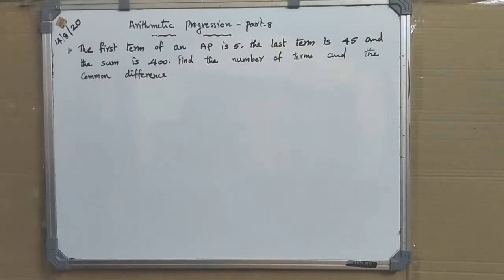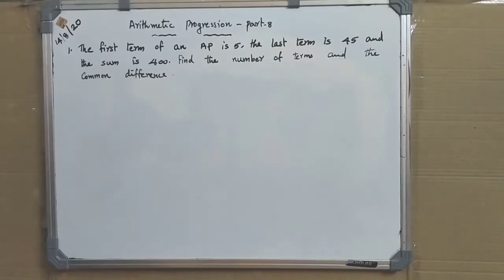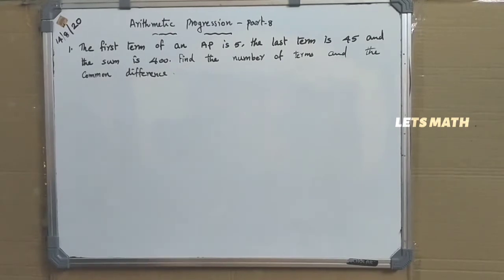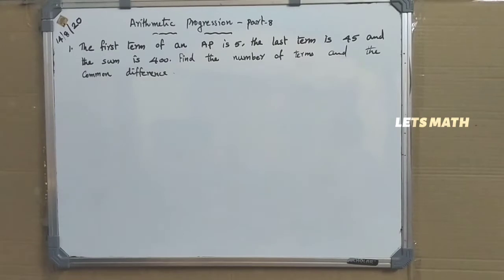Welcome back children. Today we will do some more questions from the arithmetic progression. With today's class we will wind up the lesson arithmetic progression. Now first question: the first term of an AP is 5, the last term is 45, and the sum is 400. Find the number of terms and the common difference.